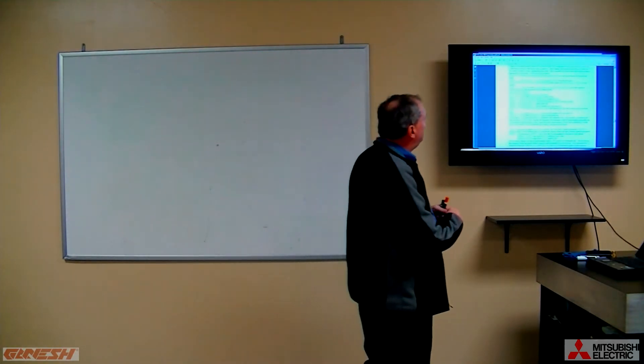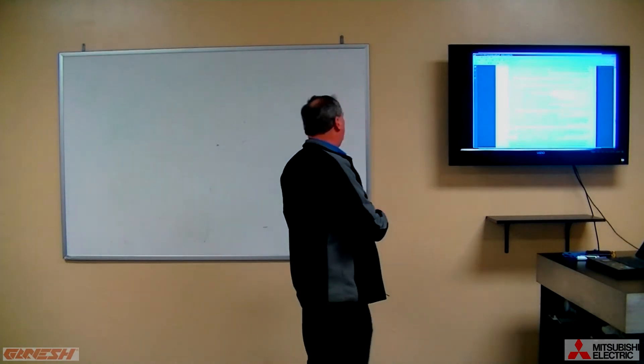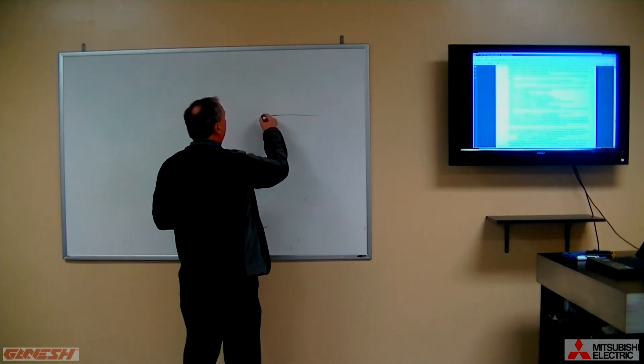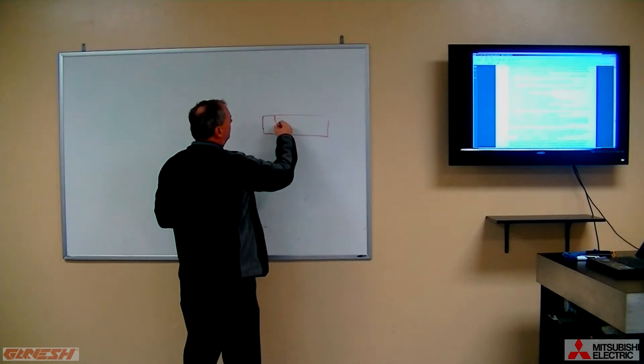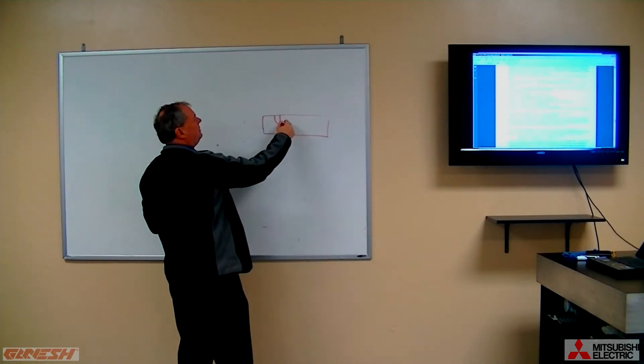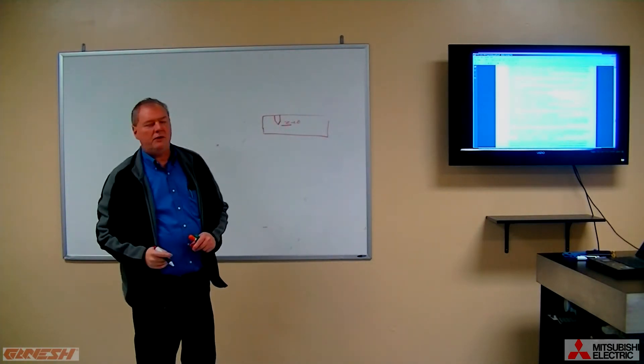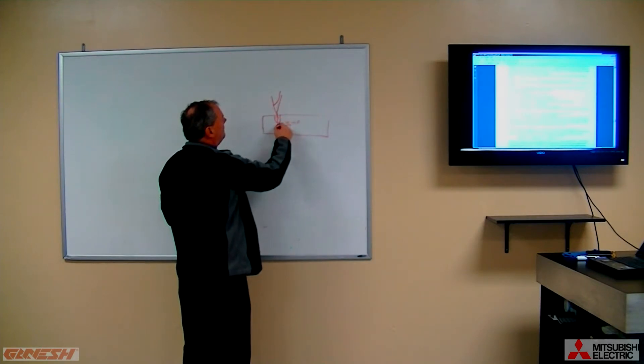But if we look at the G82 cycle now, G82 does exactly the same thing a G81 does. The difference is on a G81 cycle, if this is the part that we're drilling into, we're asking G81 to drill down to some Z level, in this case my example, Z minus 1.0. So it goes down to its R level and then will feed down to the final depth and then rapid out the moment it hits the final depth.